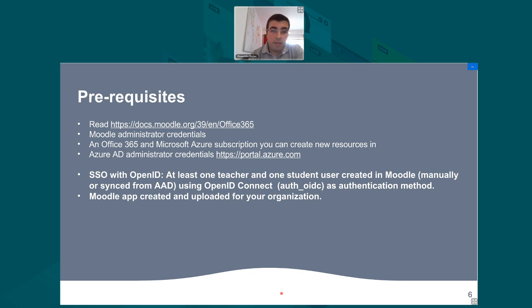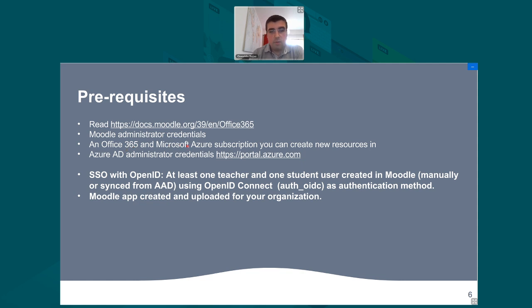The prerequisite is to read the documentation available at docs.moodle.org, which explains how to set up Moodle and Active Directory. You need to create an application, create a secret, and have the application ID so users can connect using OpenID Connect. You need Moodle administrator credentials and an Office 365 and Microsoft Azure subscription so you can create new resources and applications.